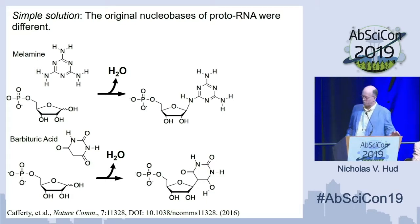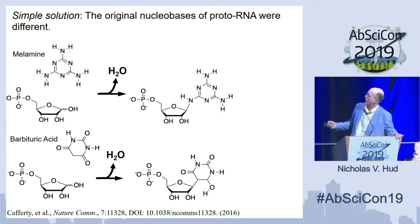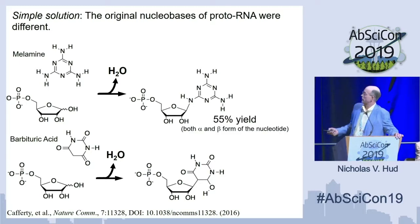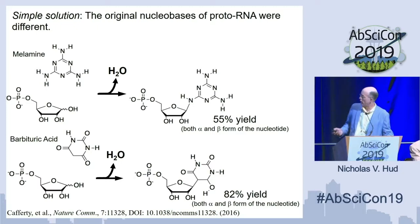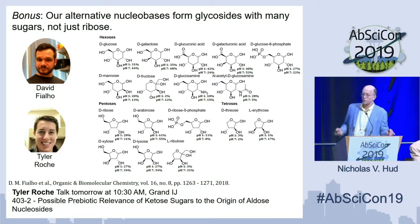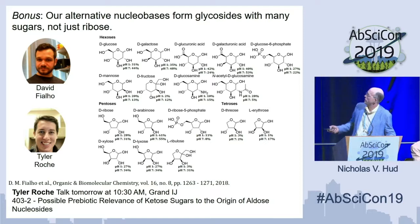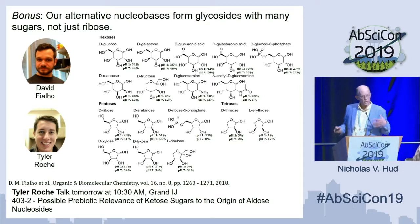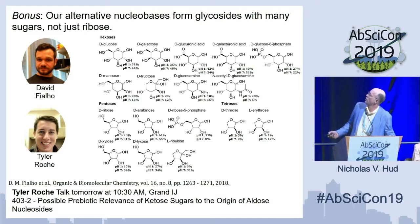A simple solution could be that the nucleobases in proto-RNA, the ancestor of RNA, were different. We've looked at melamine and barbituric acid — melamine perhaps taking the place of adenine, barbituric acid taking the place of uracil. We tested these in simple dry-down reactions: melamine gives 55% yield of both alpha and beta anomers of the nucleotides, and barbituric acid gives 82%, so these work really well. As a bonus, these alternative nucleobases that form glycosides easily with ribose also form them with many different sugars — basically every sugar we tested — which could relax the constraints on getting ribose first. David Fialho and Tyler Roach are working on this.